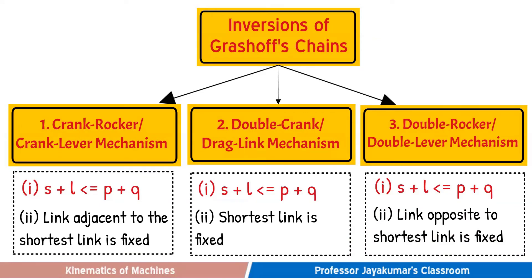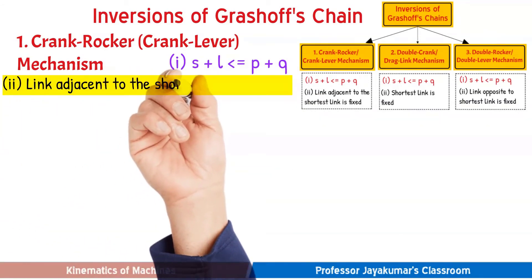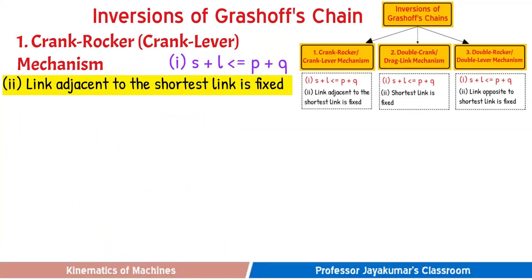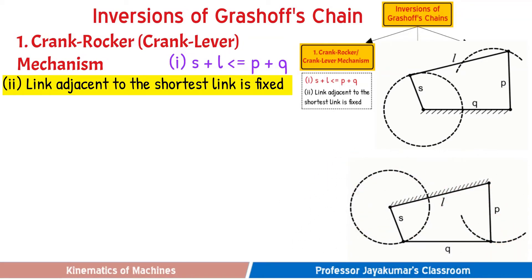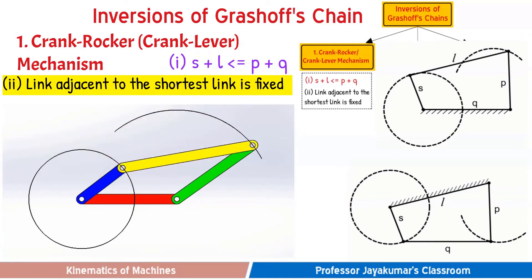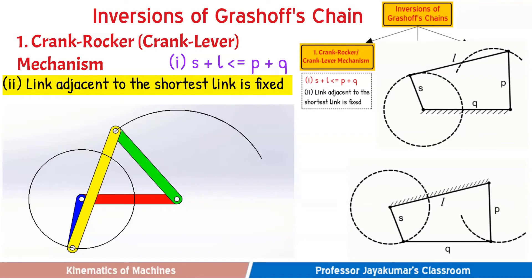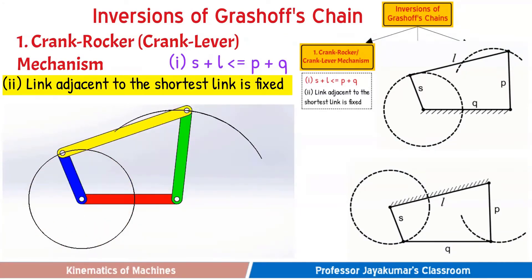Now we will present them one by one. The first inversion — crank rocker or crank lever mechanism — is obtained when two conditions are satisfied: condition one, S plus L is less than or equal to P plus Q; and condition two, any one of the links adjacent to the shortest link is fixed. As you can see, link Q which is adjacent to link S is fixed, or alternatively link L which is adjacent to the shortest link is fixed. Under both these conditions we obtain the crank rocker mechanism. As seen from the animation, the shortest link S makes complete rotation while the output link P forms oscillatory motion.